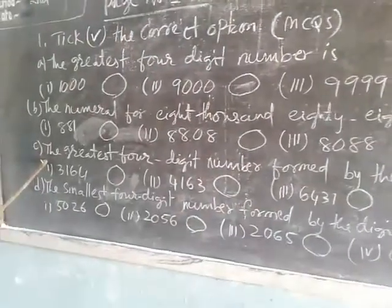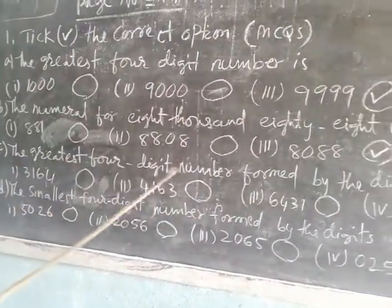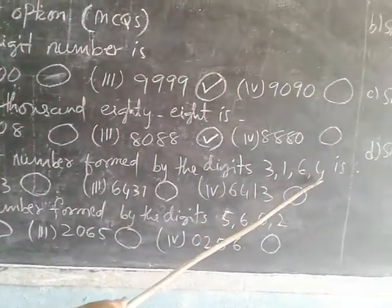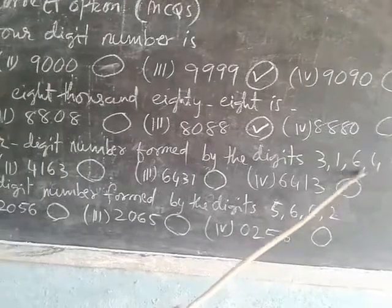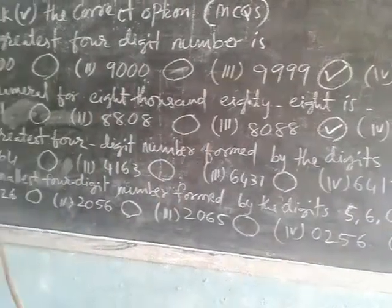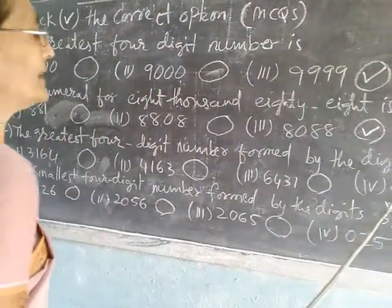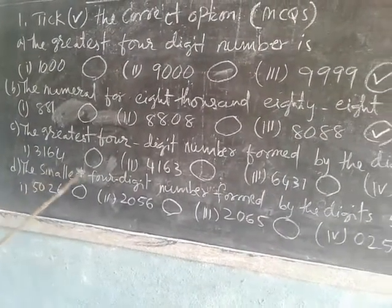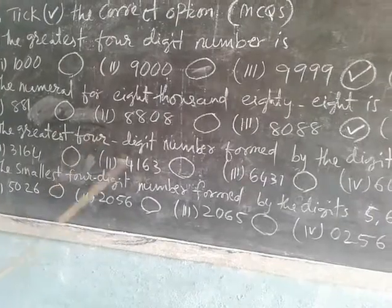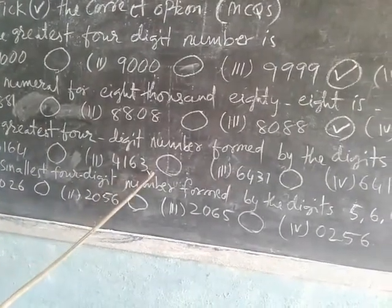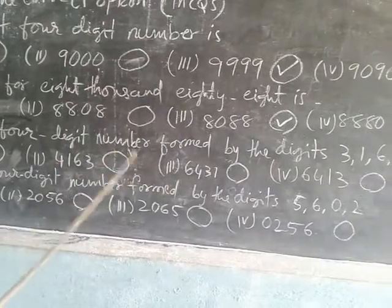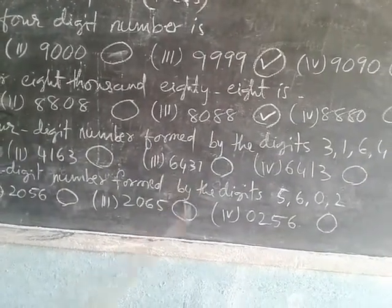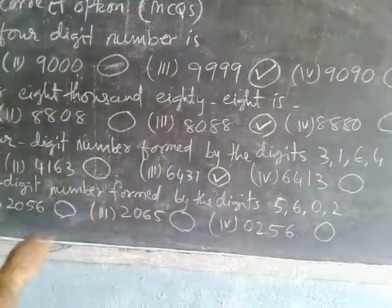Next, come to C: the greatest four-digit number formed by the digits three, one, six, and four. Which one is formed? Is it three, one, six, four? No — that is not the greatest. Is it four, one, six, three? That is also not correct. Then six, four, three, one — this is correct. You put the tick for question one C in the third option.